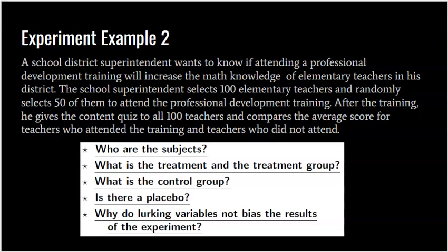Why do lurking variables not bias the results? There are lots of confounding variables: years of teaching experience, general intelligence, age, gender of the teachers — all could determine quiz scores. But because I randomly put 50 into each group, I'm evenly dispersing those variables among the two treatment groups, making them very similar on average. If one group does better, it's because both groups had a similar mix of older and younger, experienced and less experienced teachers. We can hopefully say the professional development caused those teachers to become more knowledgeable in math.